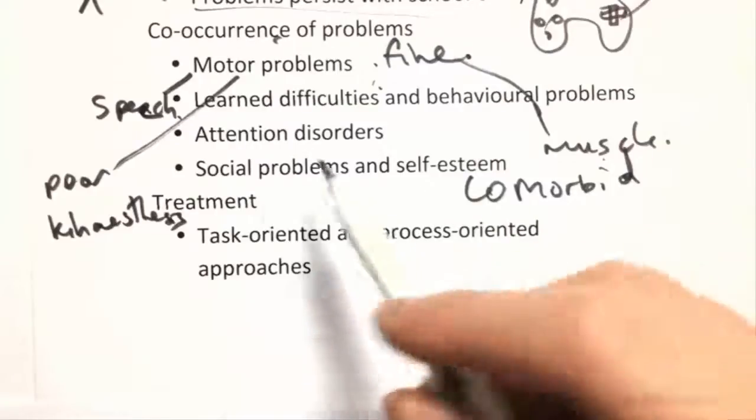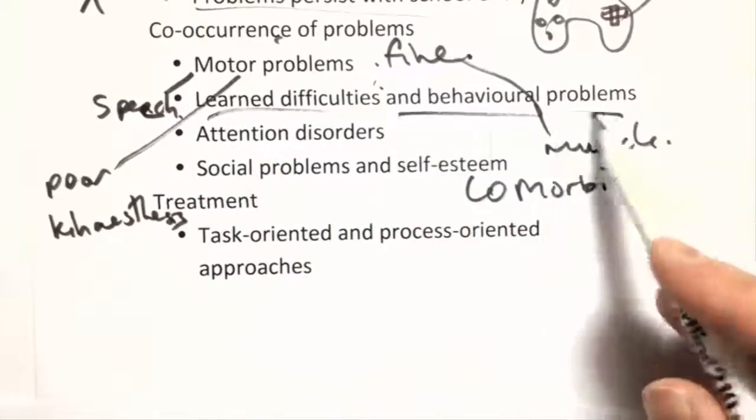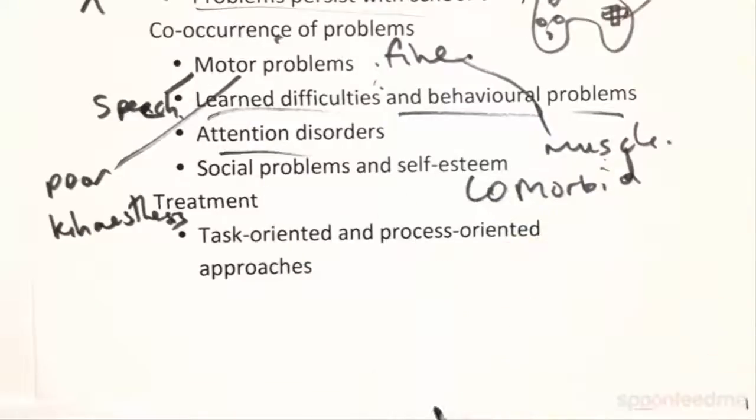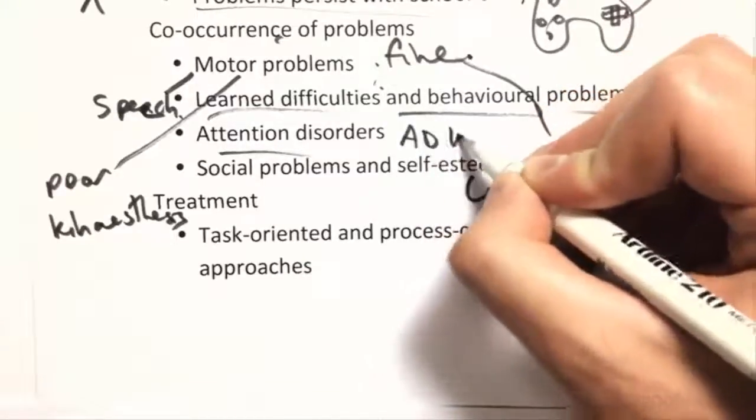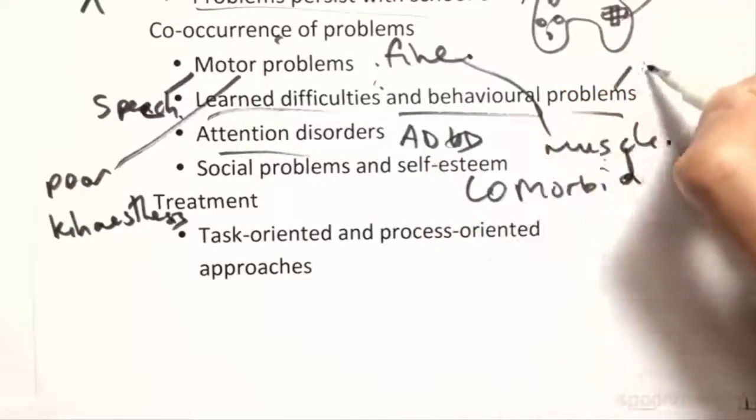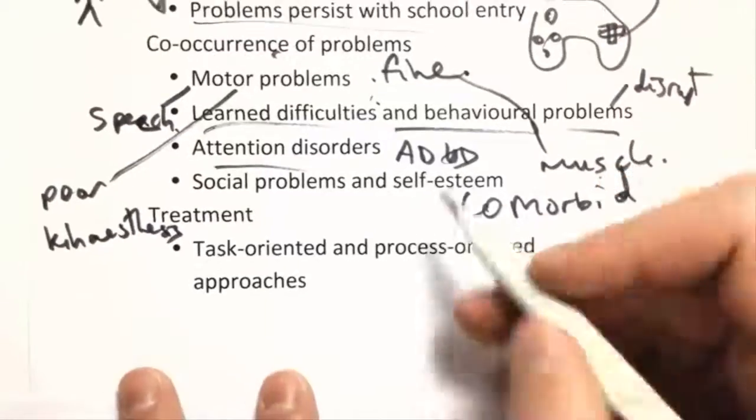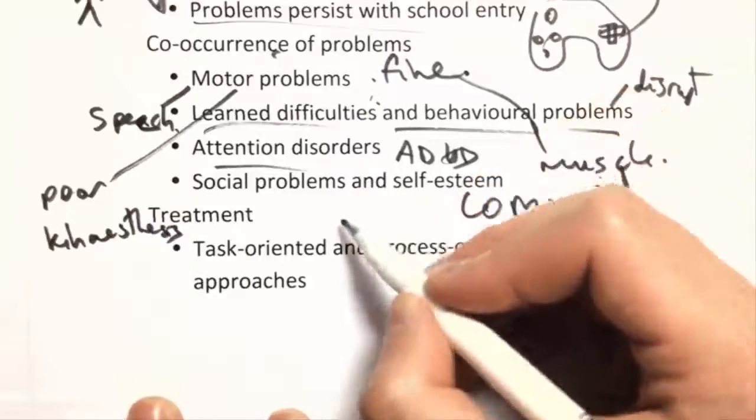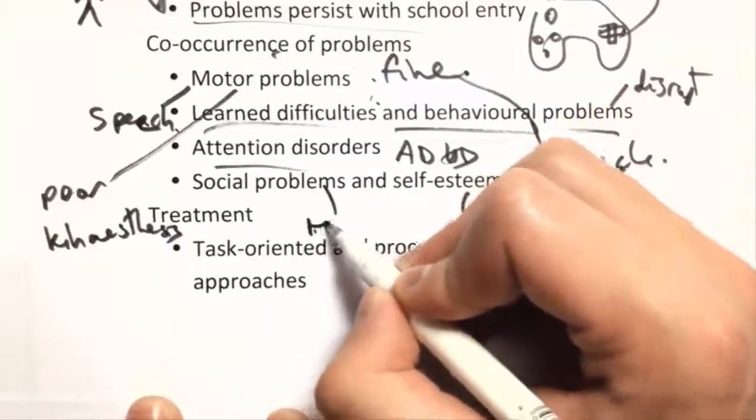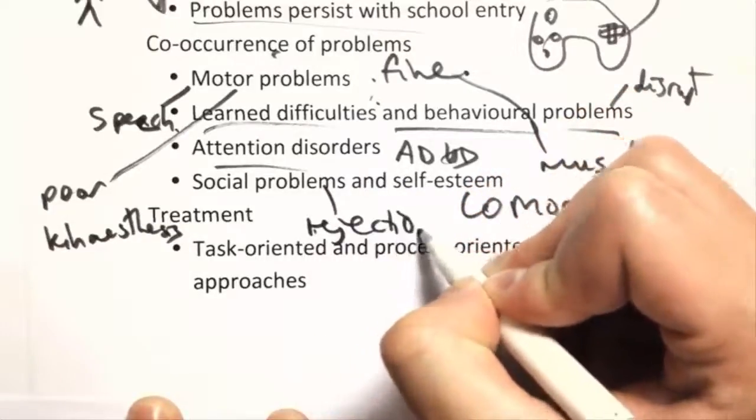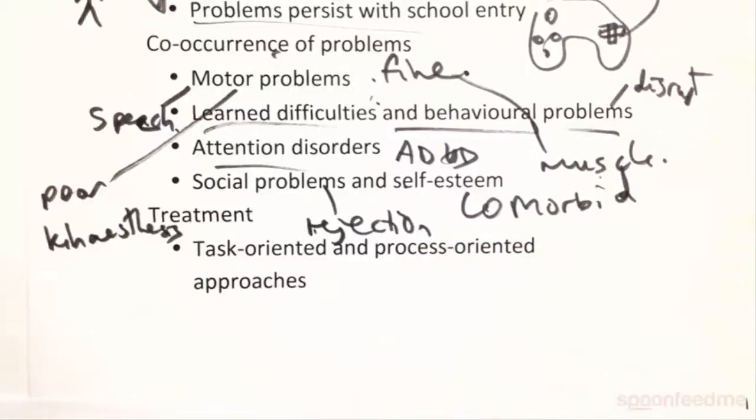So you get all these co-morbid problems like learning difficulties and behavior problems. Attention disorders like ADHD. So this is like being disruptive or something. Social problems could be something like rejection from peers. Low self-esteem. Everything kind of escalates.